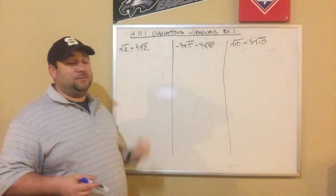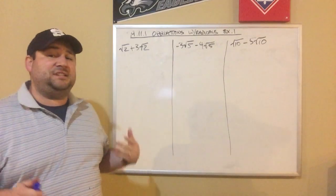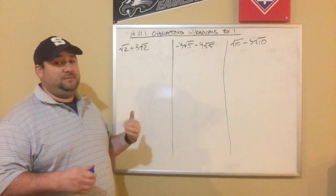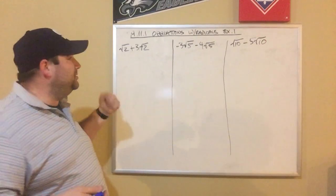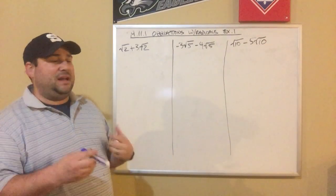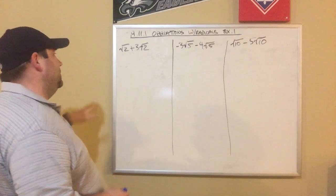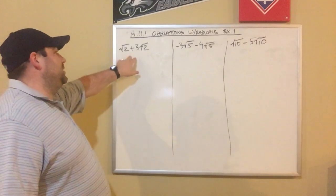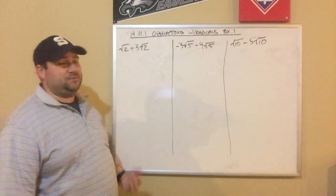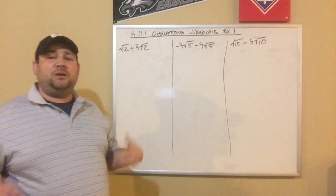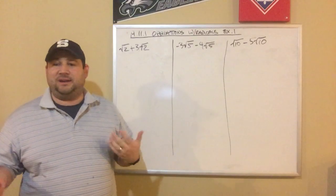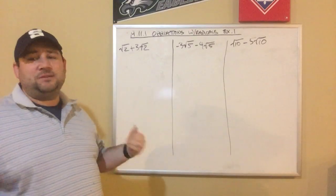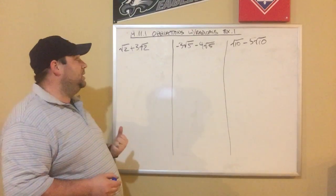Our first set of examples really aren't that challenging. You might look at it and be like, I don't know what to do. But when I show you, you can see it's really not all that bad. So the first one is root 2 plus 3 root 2. Your directions are going to be to simplify the radical expression, which basically means do everything you can do.